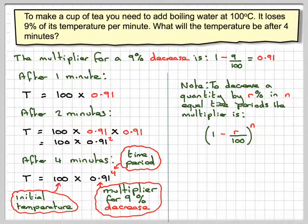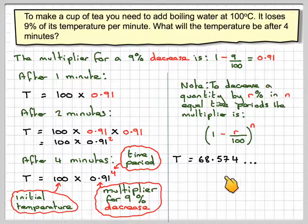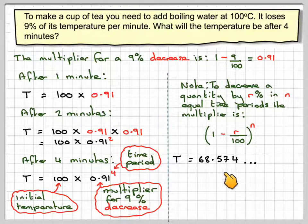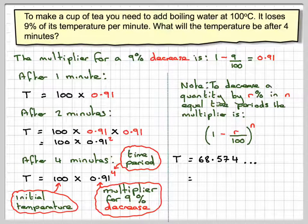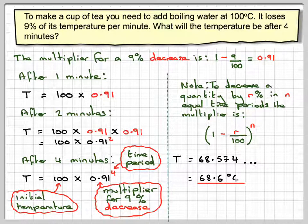Going back to our problem, working this out I calculated we get 68.574 carrying on. Normally in IGCSE you need to round to 3 significant figures so it becomes 68.6 degrees C.